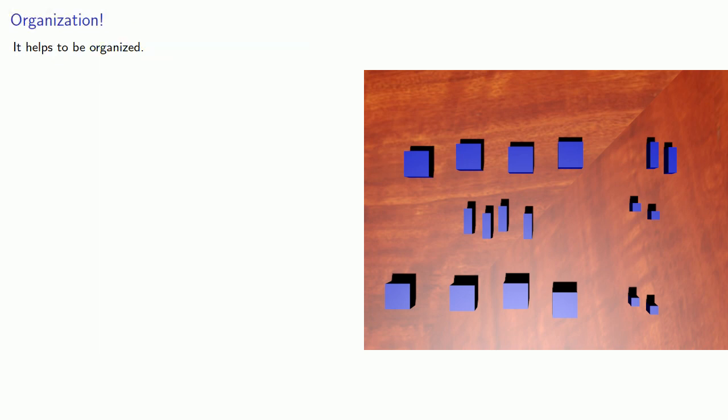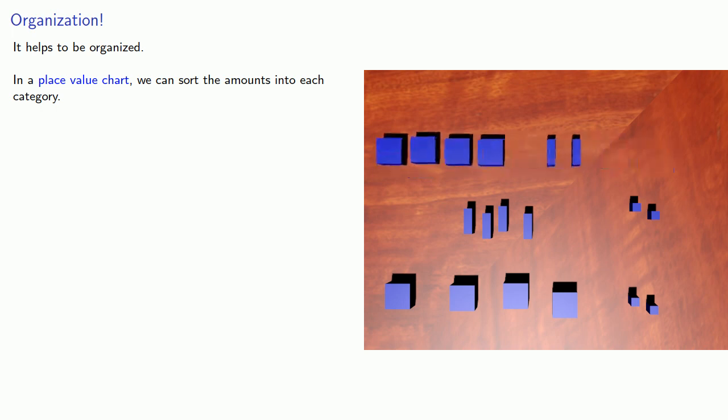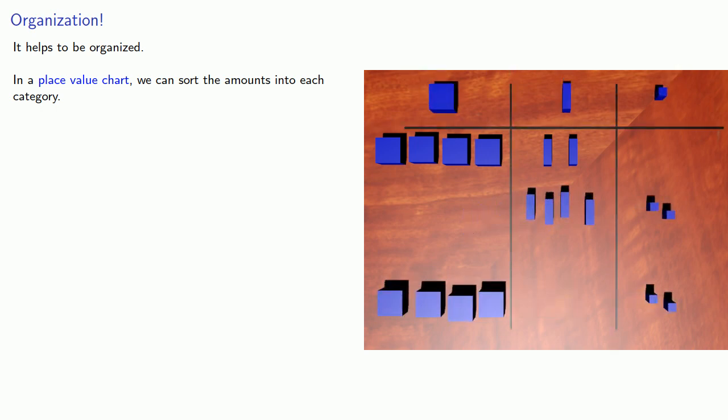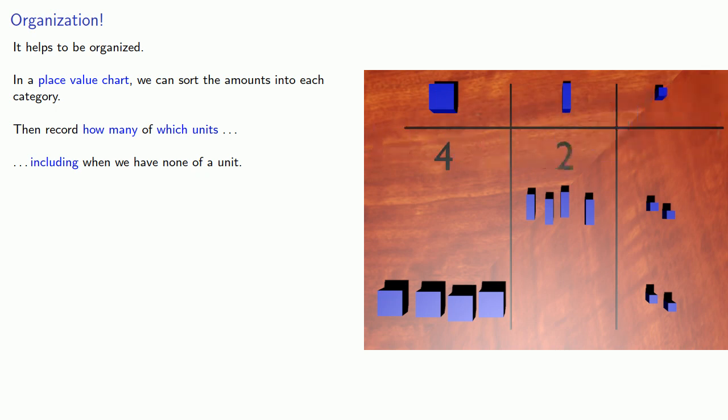So it helps to be organized. In a place value chart, we sort the amounts into each category. Then record how many of which units, including when we have none of a unit. So here in this first row, we have 4 of these things, 2 of these things, and 0 of these. So we'll record those amounts 4, 2, 0.